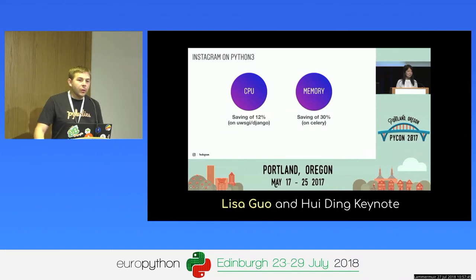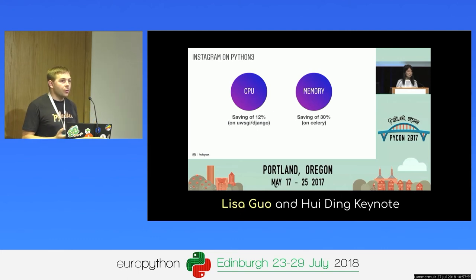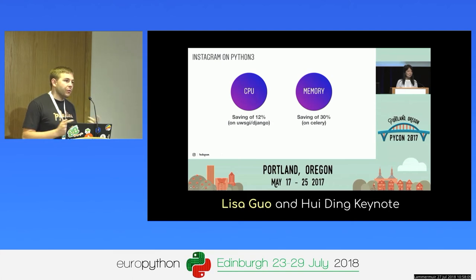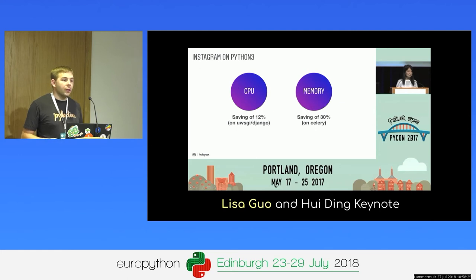To give these numbers concretely: Instagram has 700 million users and runs a very large Django application. It's fully written in Python, and they switched from Python 2 to Python 3. Thanks to this move, they saved 12% of CPU and 30% of memory. At that scale, performance really matters — it's very expensive to have so much hardware.